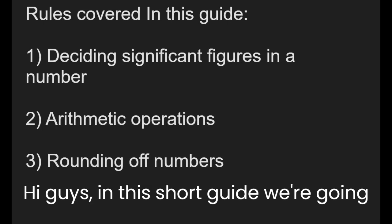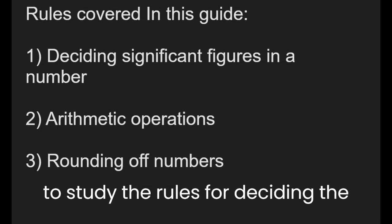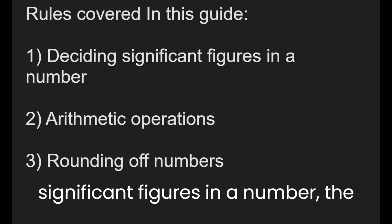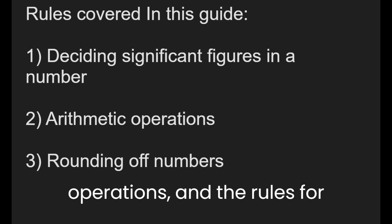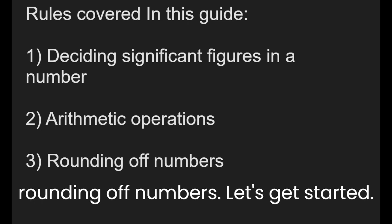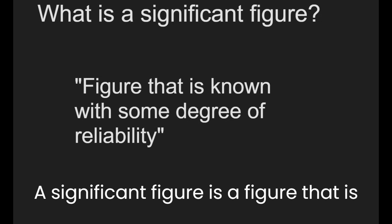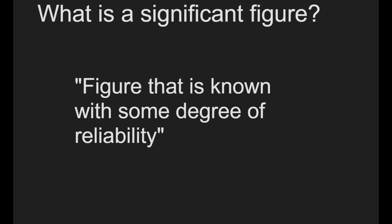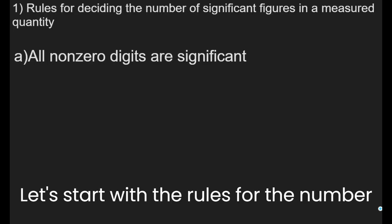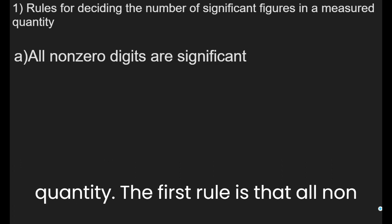Hi guys, in this short guide we're going to study the rules for deciding the significant figures in a number, the rules for arithmetic operations, and the rules for rounding of numbers. Let's get started. A significant figure is a figure that is known with some degree of reliability. Let's start with the rules for the number of significant figures in a measured quantity.